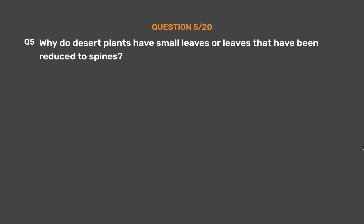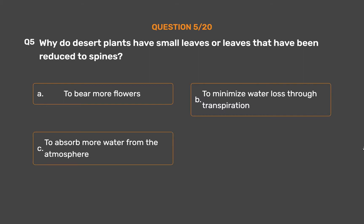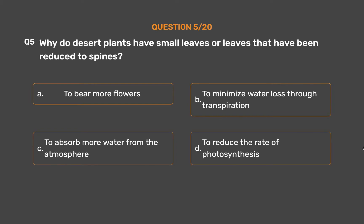Question 5. Why do desert plants have small leaves or leaves that have been reduced to spines? Option A: To bear more flowers. Option B: To minimize water loss through transpiration. Option D: To reduce the rate of photosynthesis.